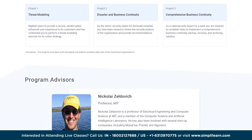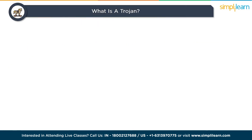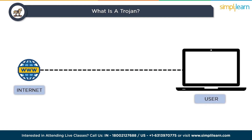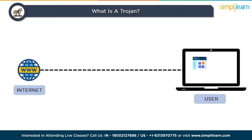Before we delve into the removal process, let's have a solid understanding of what trojans are. A trojan, short for trojan horse, is a type of malicious software that disguises itself as legitimate software. Once inside your system, it can perform various malicious actions from stealing sensitive information to giving hackers unauthorized access to computers. Trojans masquerade as legitimate software or files, tricking users into installing them, and often come bundled with seemingly harmless software or hidden within enticing email attachments.